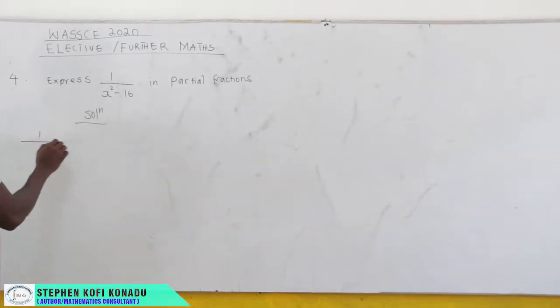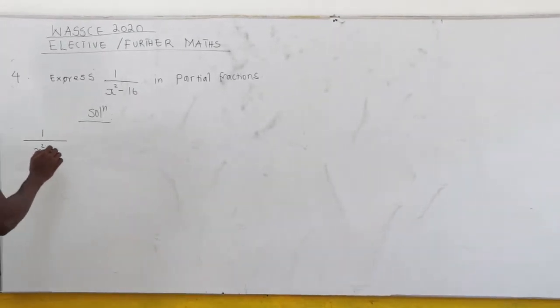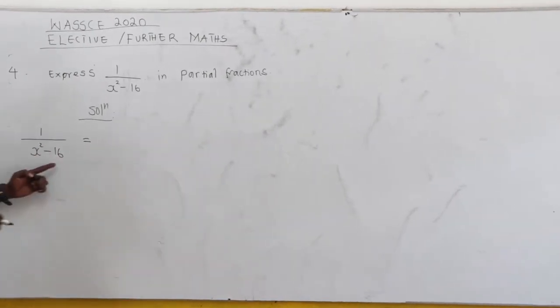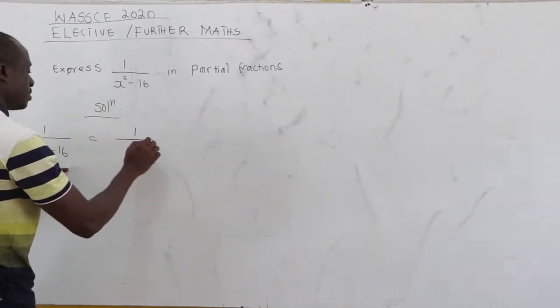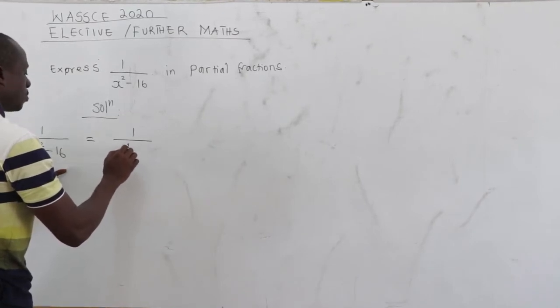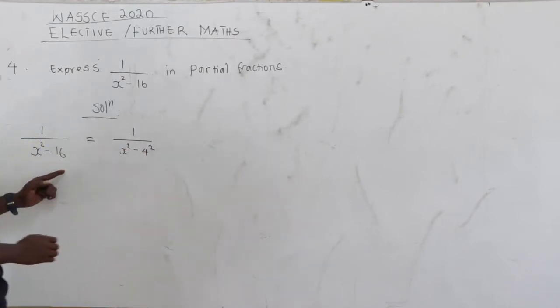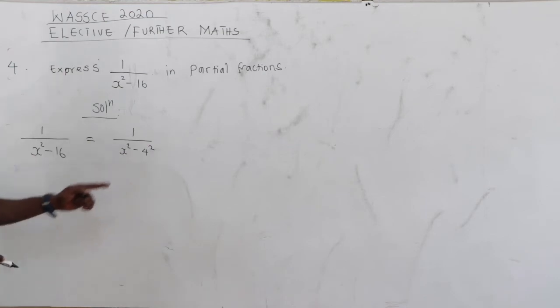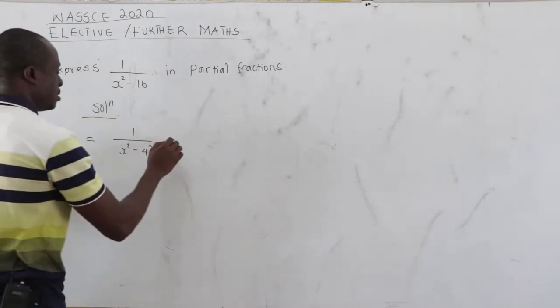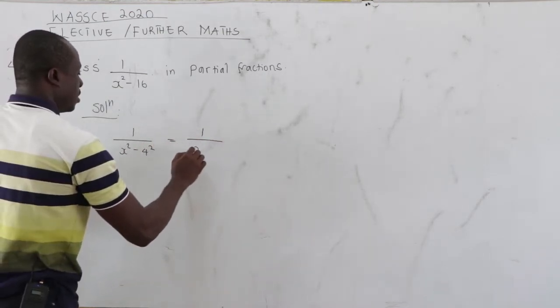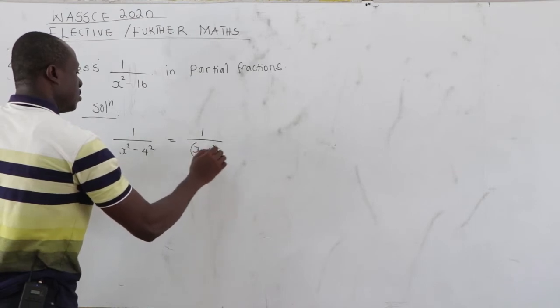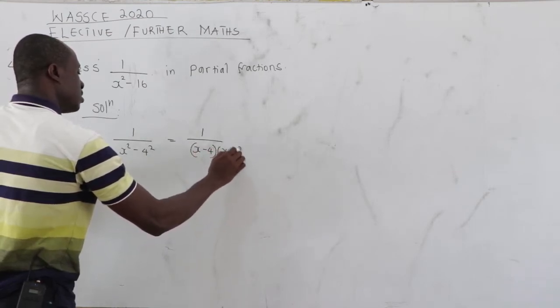Now we have 1 all over x square minus 16. Now x square minus 16, this difference of two squares, can be expressed as x square minus 4 square. And then x square minus 4 square is the same as 1 all over x minus 4, x plus 4.